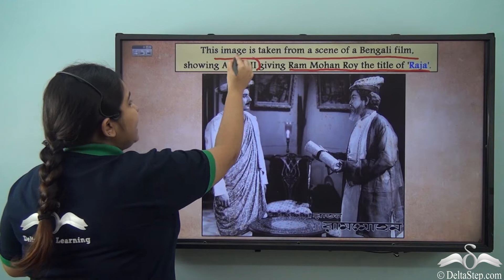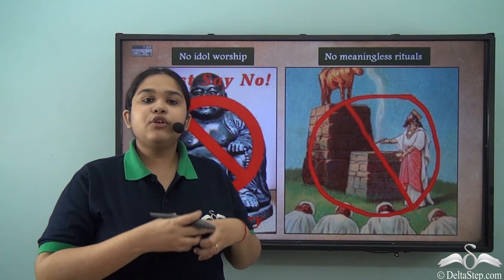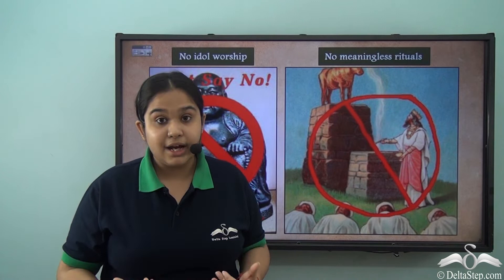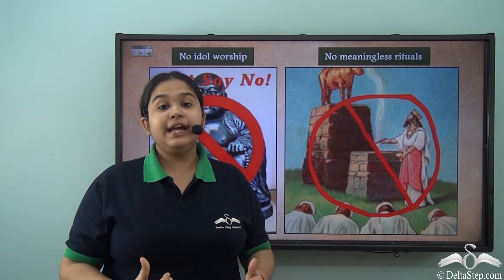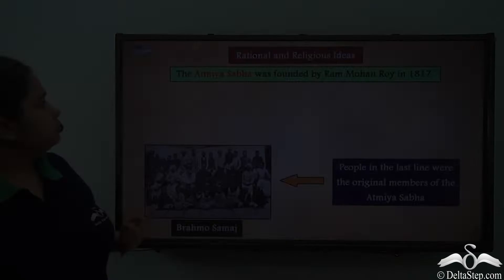Ram Mohan Roy's ideas were very staunch — he believed that all these religious observations were useless religious practices. Ram Mohan Roy also believed in monotheism, the theory of one God, and did not believe in idol worship. So he said no to idol worship and to meaningless rituals.